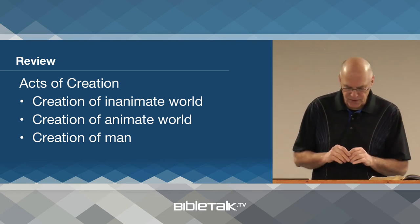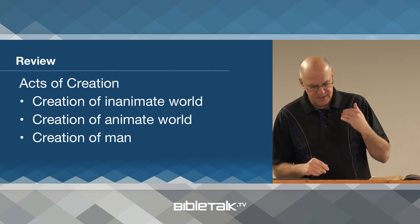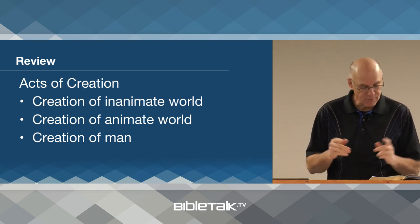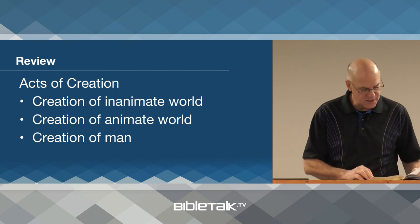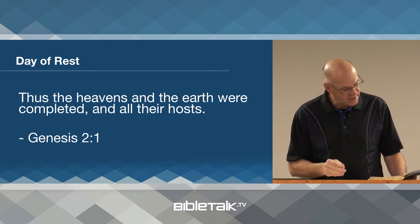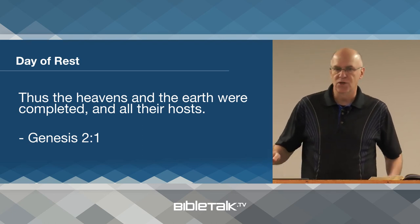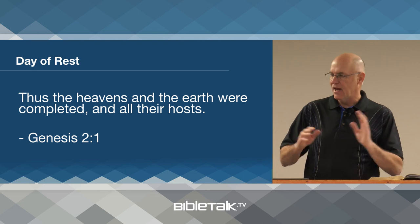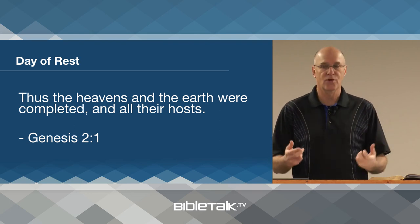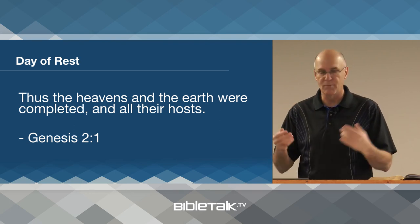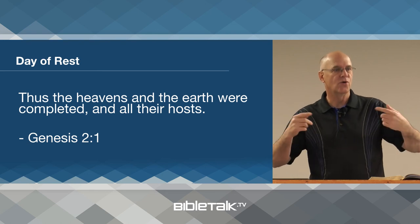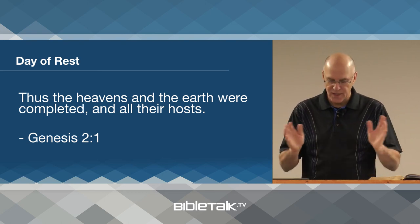Note that the Bible says everything that was created was created then. Let's go to chapter two of Genesis beginning in verse one. Moses says: 'Thus the heavens and the earth were completed and all of their hosts.' Moses is saying everything that was in the heavens and everything that was on the earth was done, was complete — no new creation, no unknown creation. Everything that God has created is complete.